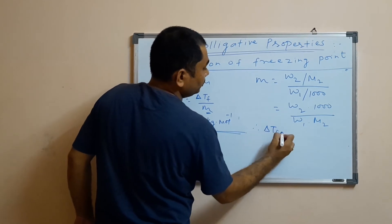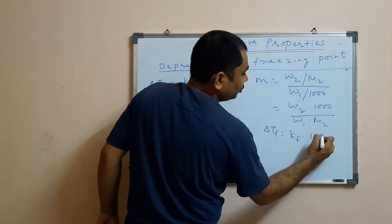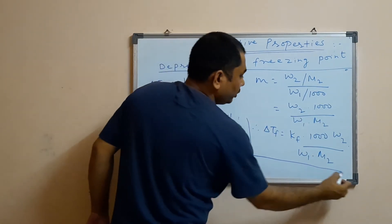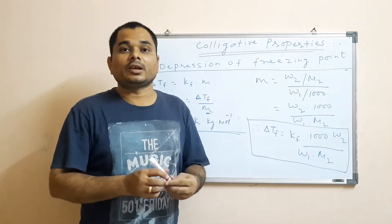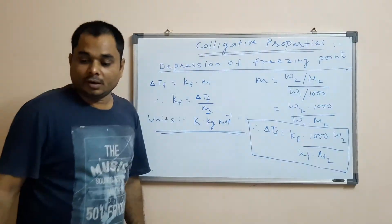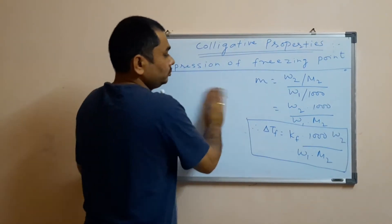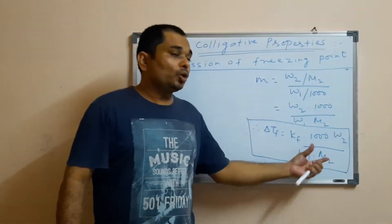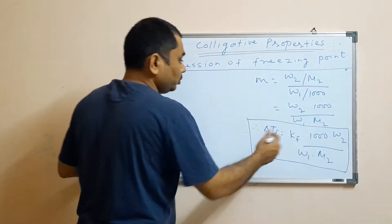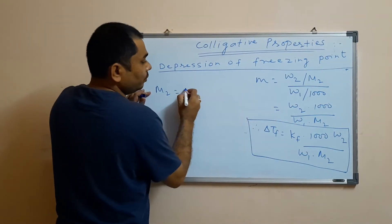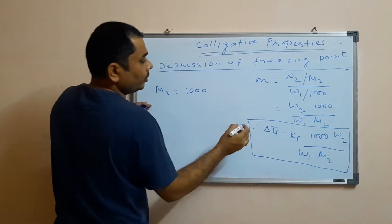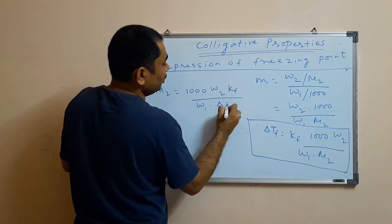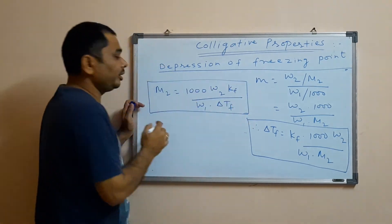Therefore, ΔTf = Kf × (W2 × 1000) / (W1 × M2). This is an important formula needed for solving numerical problems in board exams as well as competitive exams. From this we can determine the molar mass of the solute: M2 = (1000 × W2 × Kf) / (W1 × ΔTf). This is the formula for calculating the molar mass of the solute.